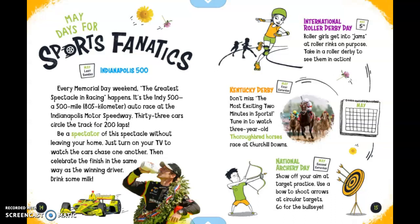The Kentucky Derby is the first Saturday in May. Don't miss the most exciting two minutes in sports — tune in to watch three-year-old thoroughbred horses race at Churchill Downs. National Archery Day is the second Saturday in May. Show off your aim at target practice: use a bow to shoot arrows at circular targets and go for the bullseye.